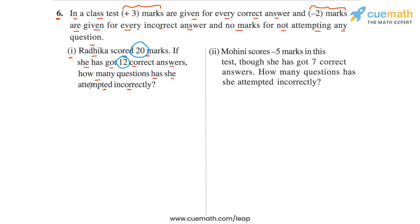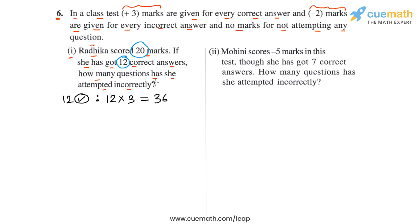For her 12 correct answers, what score will Radhika get? For the 12 correct answers, Radhika will get 12 into 3, because you get 3 marks for every correct answer. So 12 into 3 gives 36 marks.